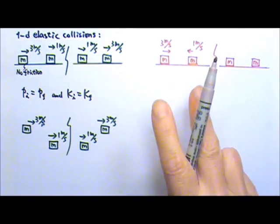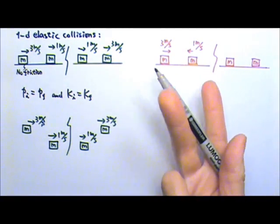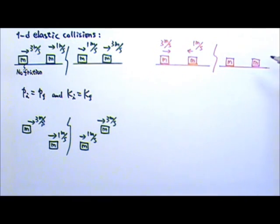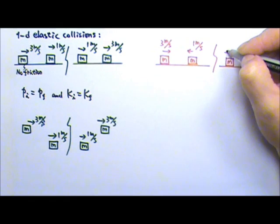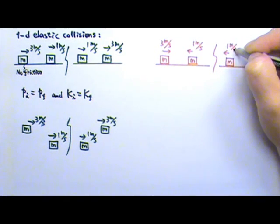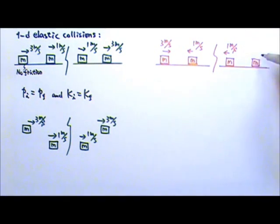Again, the boxes will switch velocities to keep momentum and the kinetic energy conserved. So this box will get the one meter per second velocity to the left and that one will get the three meters per second velocity to the right.